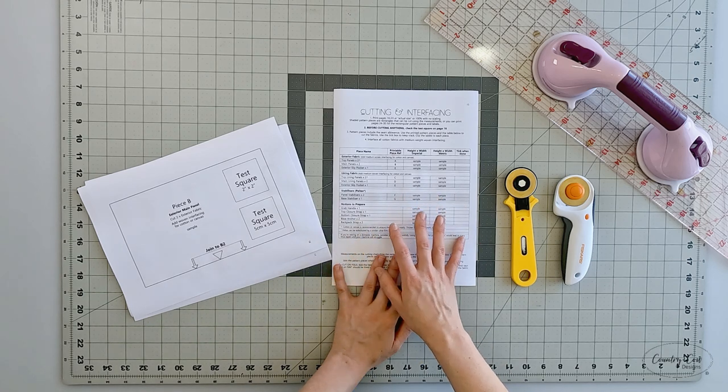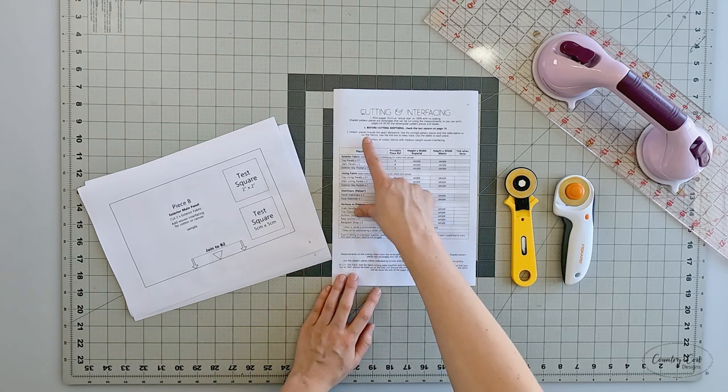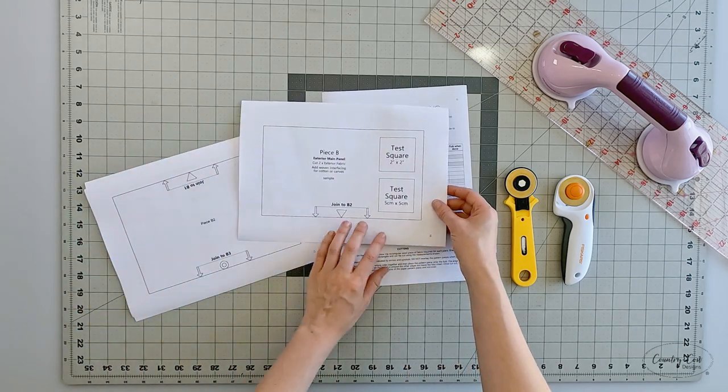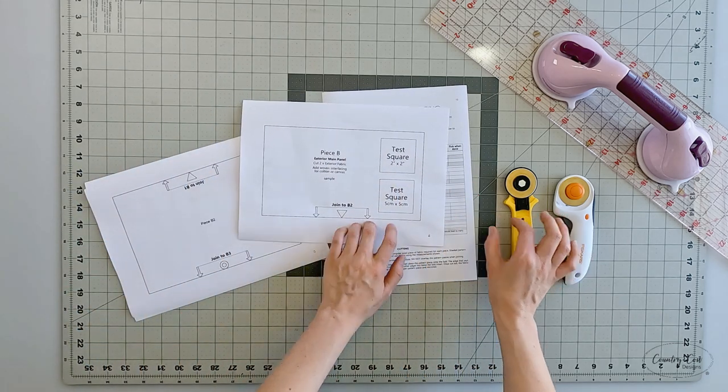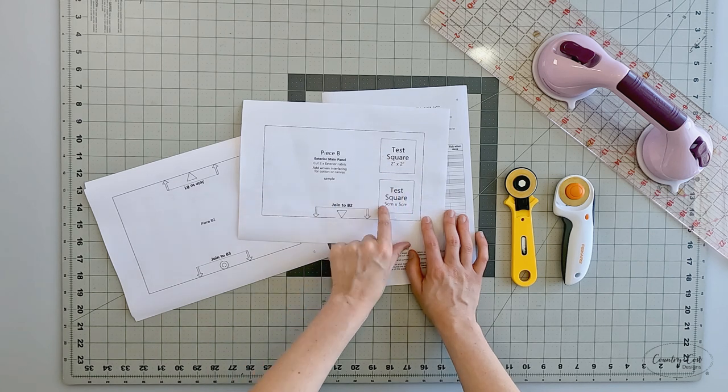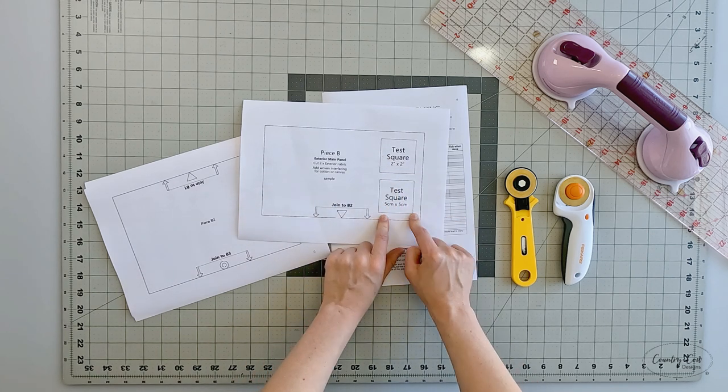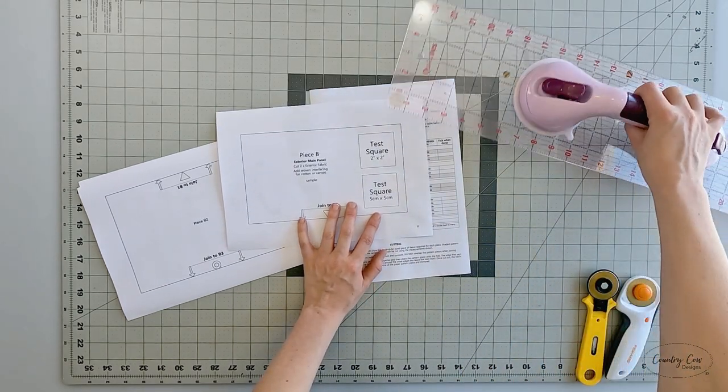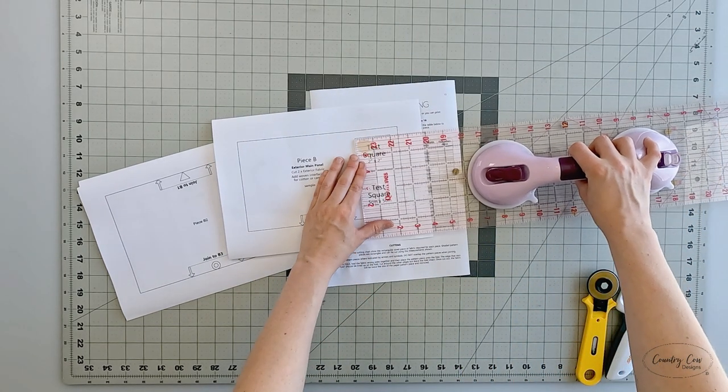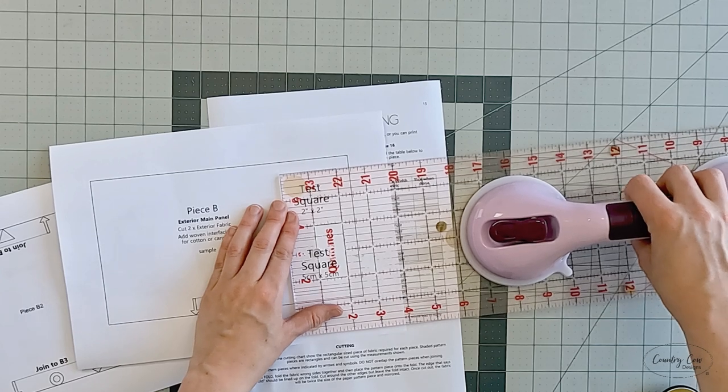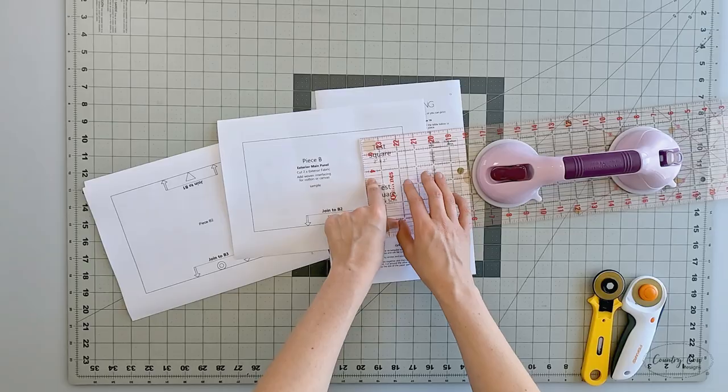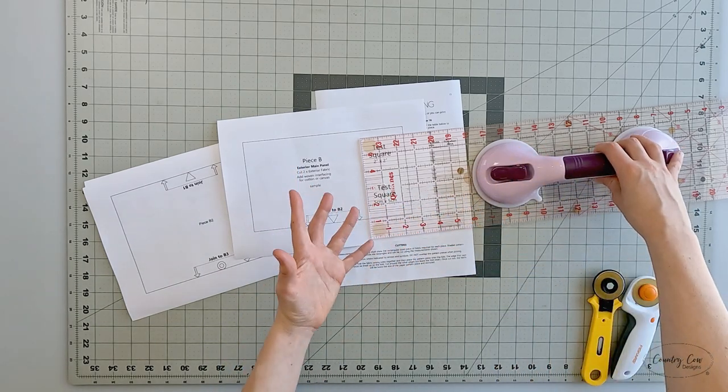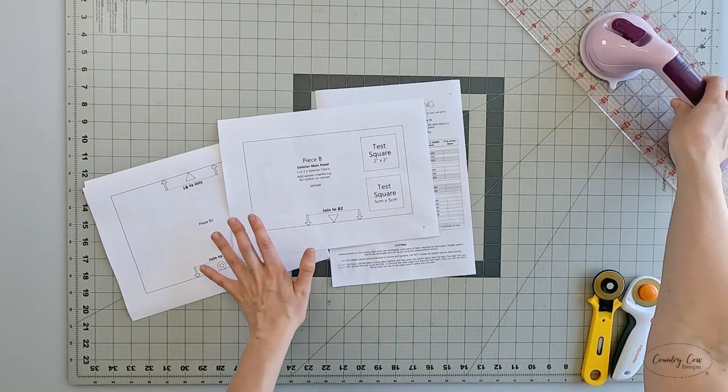Before you cut anything, check your test square. Every pattern will have a test square. This is 2 inches by 2 inches or 5 centimeters by 5 centimeters if you're using metric. You want to just check that it fits perfectly. If it's slightly off, that can mean you're printing at say 97 or 98 percent or 102 percent, and it will throw all of your pattern pieces off.